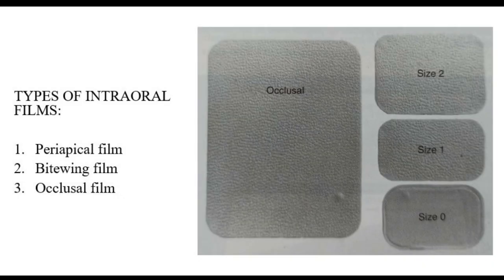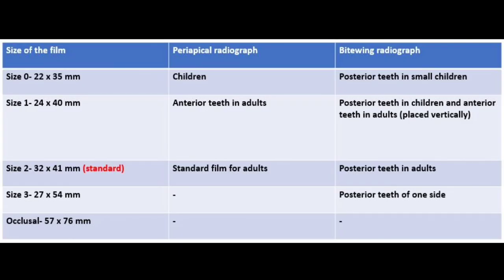First, let us see the different types and sizes of intraoral films available and their corresponding uses. There are basically three types: periapical films, bite wing films, and occlusal films. Size 0, measuring 22x35mm, is used for periapical radiographs of small children and also bite wing radiographs of the posterior teeth in small children. Size 1, measuring 24x40mm, is used for periapical radiographs of the anterior teeth in adults.